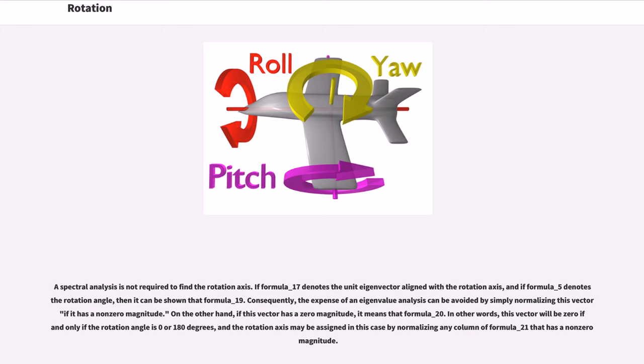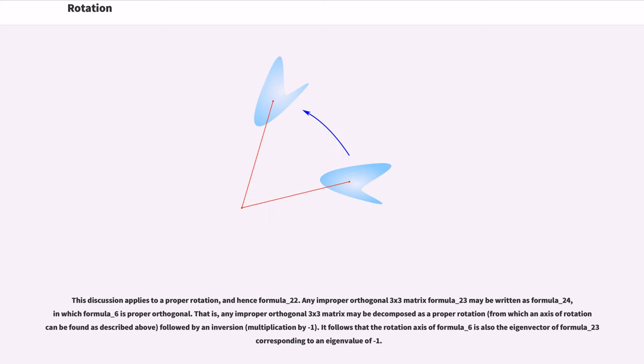On the other hand, if this vector has a zero magnitude, it means the formula equals A plus its transpose. In other words, this vector will be zero if and only if the rotation angle is zero or 180 degrees, and the rotation axis may be assigned in this case by normalizing any column that has a non-zero magnitude. This discussion applies to a proper rotation.